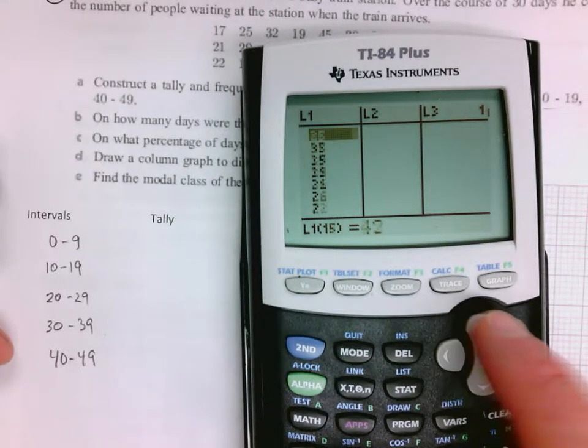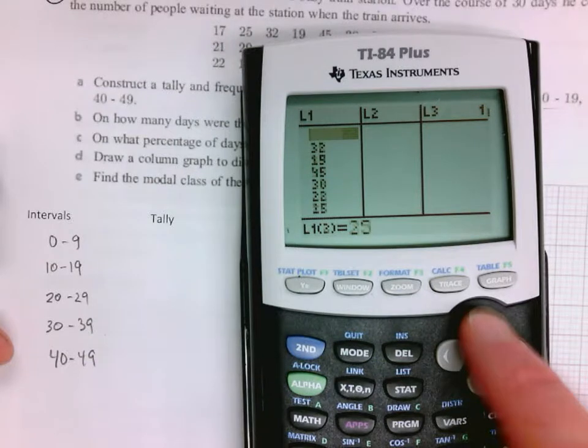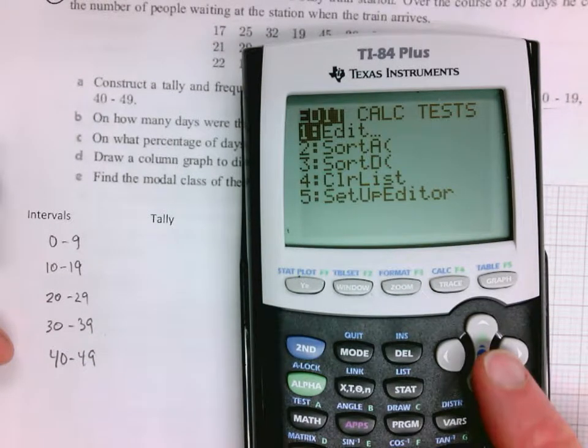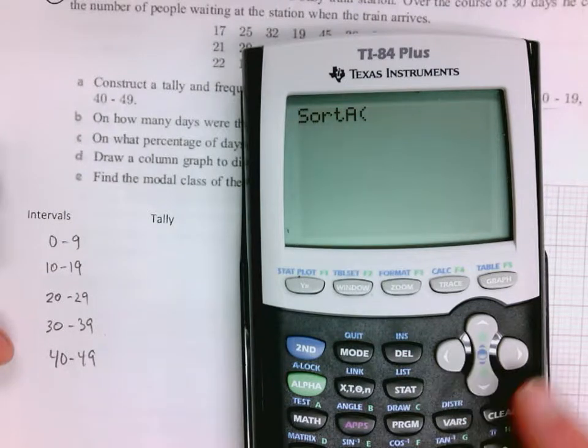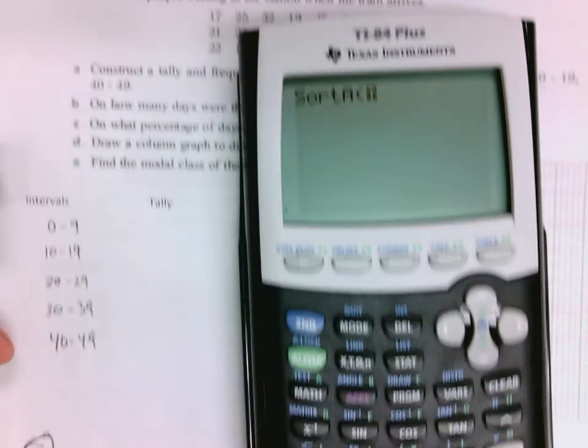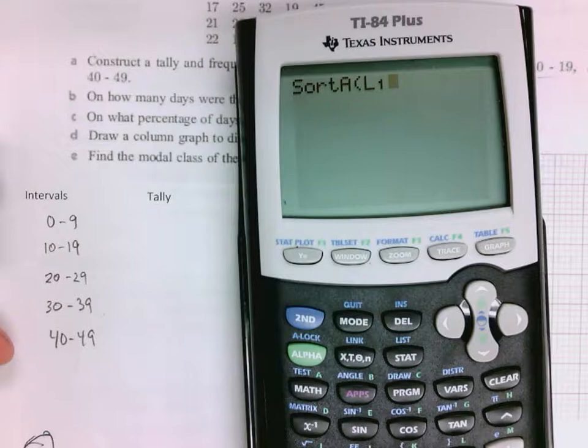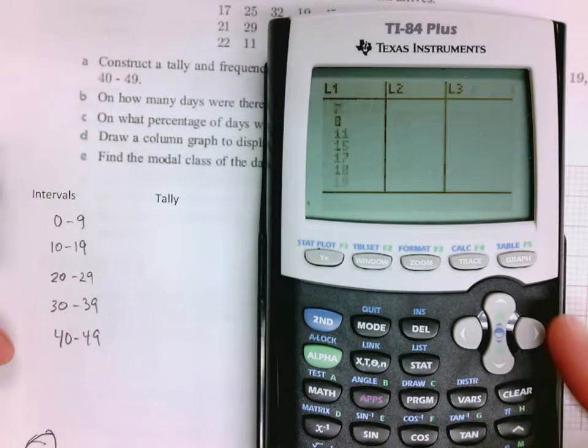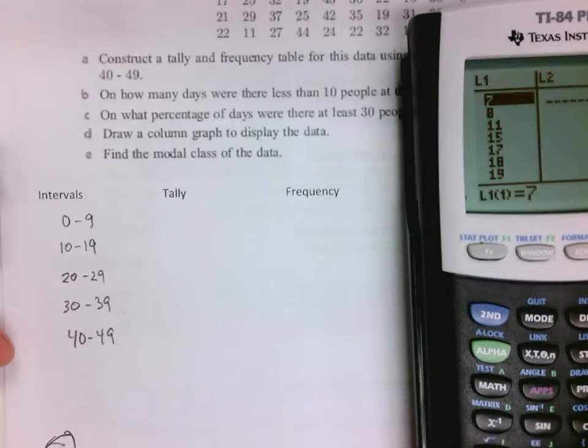I entered all the data values and what I'm going to do is sort the data in my list one. When I go back to look at the list, I can put them in the frequency chart a lot faster. I don't have to tally. It just depends on how you want to do this.